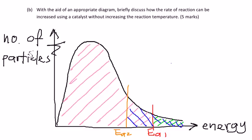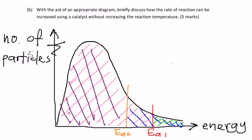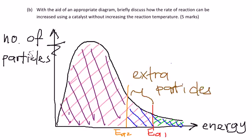And the particles that are unable to react is only this purple part over here. So we can see that this amount is the extra particles that are able to react due to the decreased activation energy that was brought about using the catalyst.